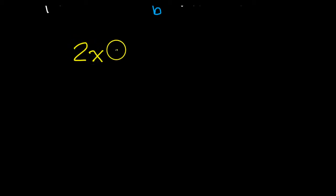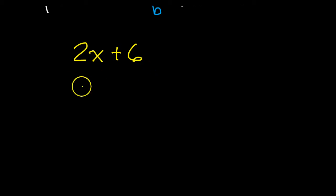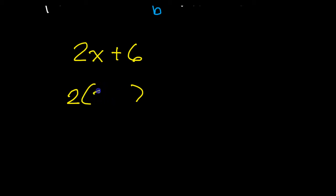Remember when we used to factor — when we had expressions like 2x plus 6. Sometimes we would factor this by pulling out the greatest common factor, the 2. And then figure out what goes on the inside, which would be x plus 3. That's obvious because you can think: 2 times 3 makes 6.